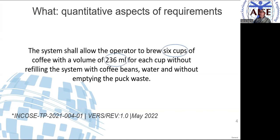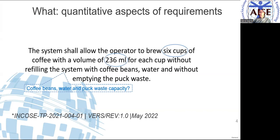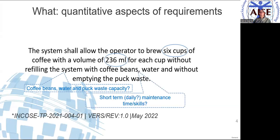The explicit ones are the six cups and the volume of each cup — easy. Less easy, there are some implicit ones. For example, stating six cups of 236 milliliters implicitly means there must be enough coffee beans, enough water, and also enough waste capacity. So this implicitly addresses quantitative aspects.